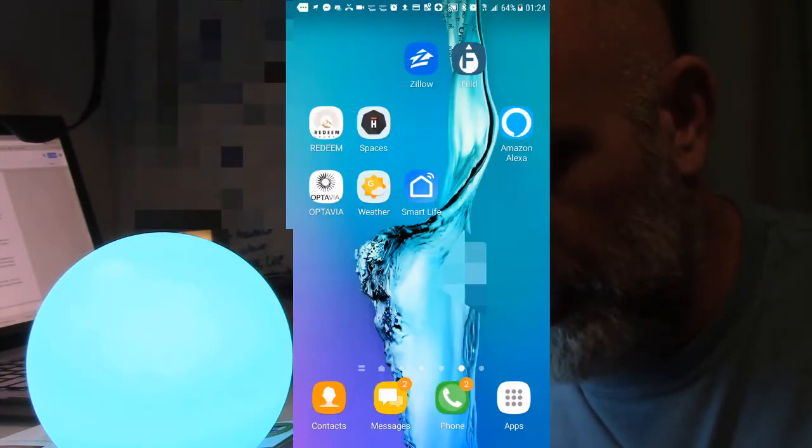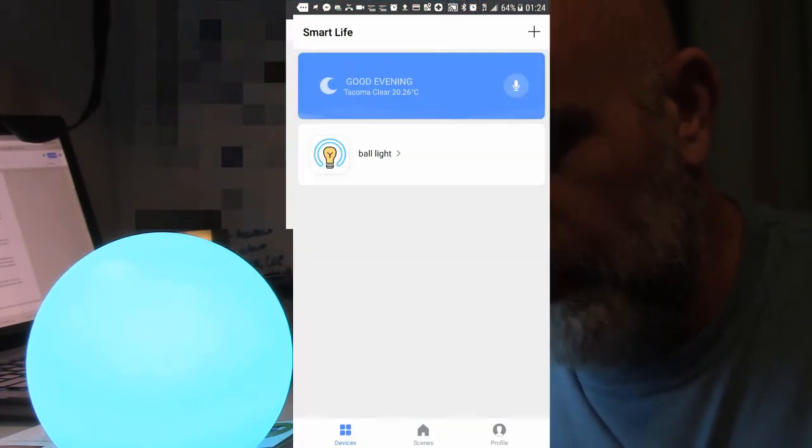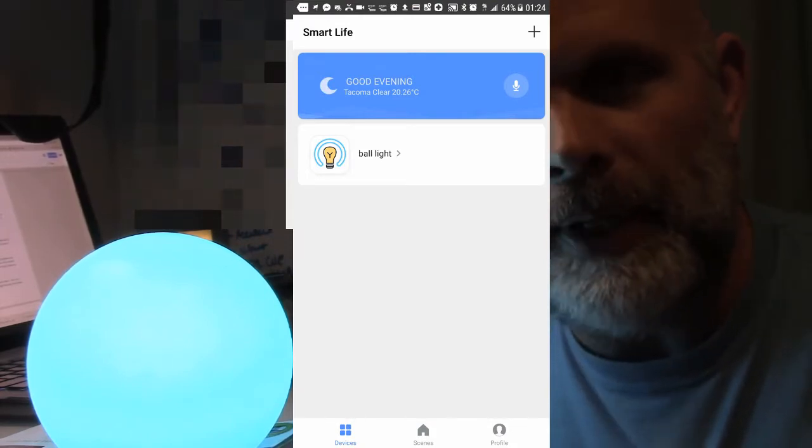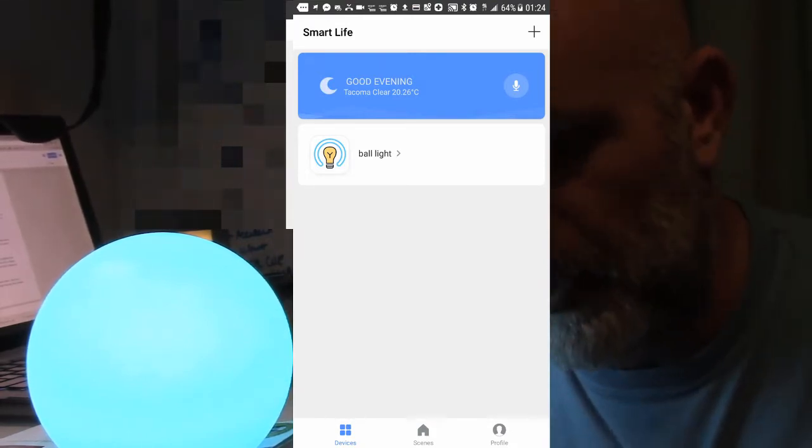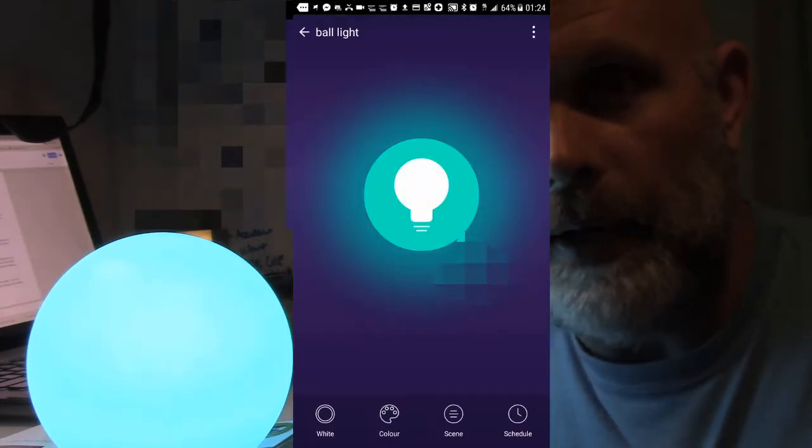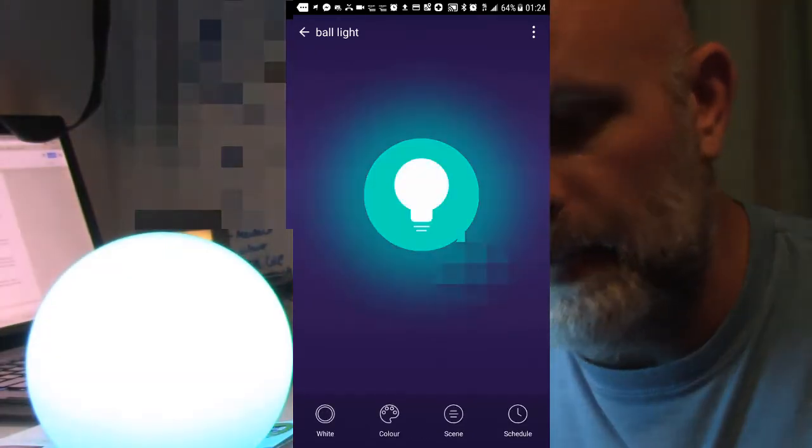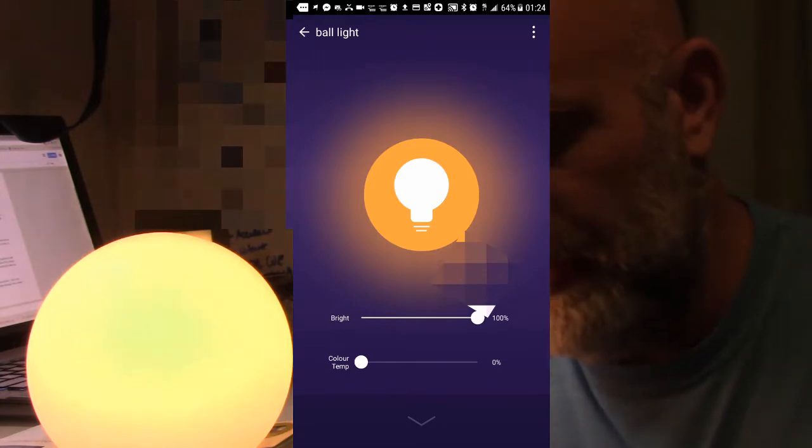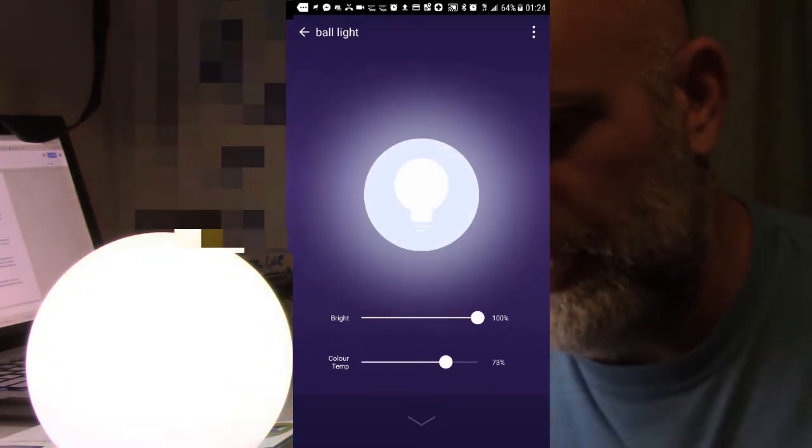I'm going to go ahead and go into my app. I've named it the ball light because frankly it's a ball. I'm going to tap into that and here you go - I can turn it on and off just by clicking the button here. See that? I can make it just white. I can change the color temperature, the brightness.